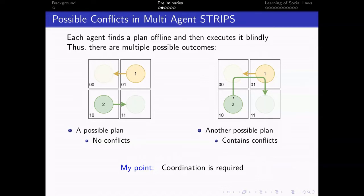And this joint plan does not contain conflicts. Another possible outcome is here on the right, where for some reason the second agent decides to go up and then down. And this joint plan contains conflict. So of course, even in this very simple two-agent domain coordination is required.